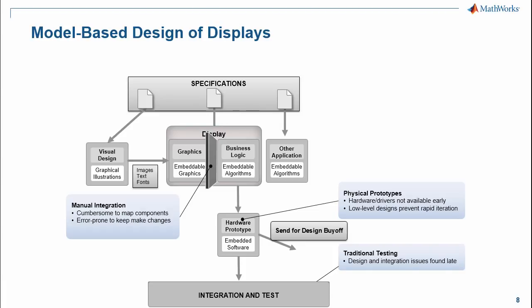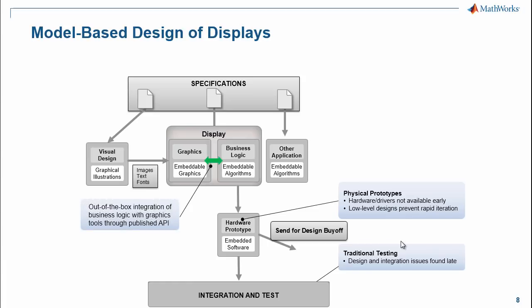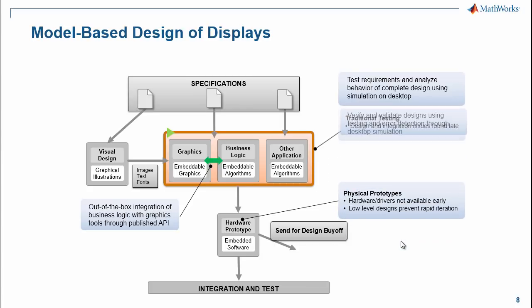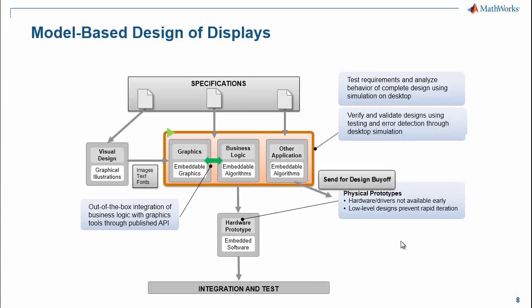With model-based design, you use high-level graphical models to develop algorithms for your business logic. These models are then integrated with the graphics through APIs. You can simulate the models on your desktop to understand your requirements and start testing your designs. These models can include algorithms from other components as well, so now you can test the complete application using simulation and catch design errors early — all before any hardware is available.